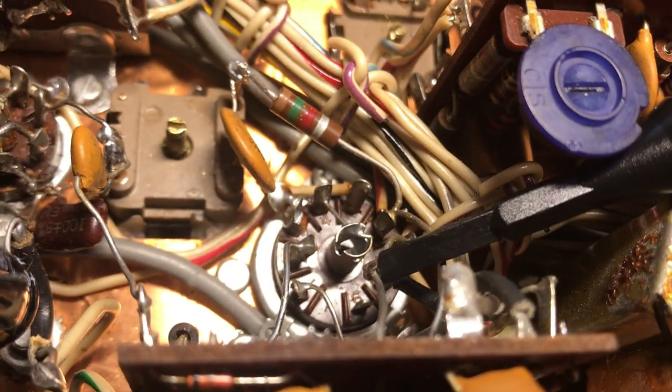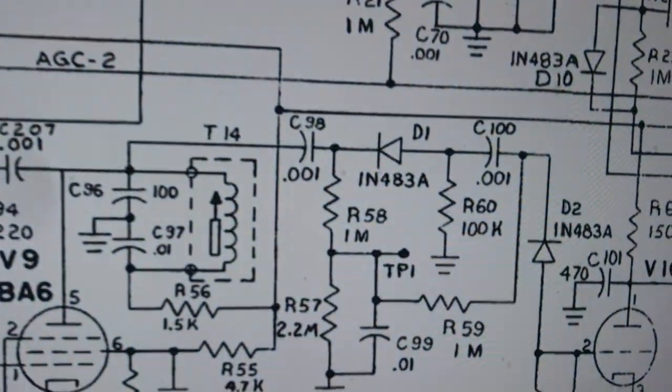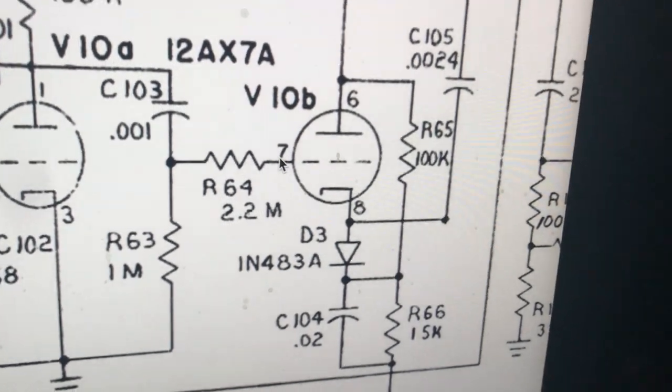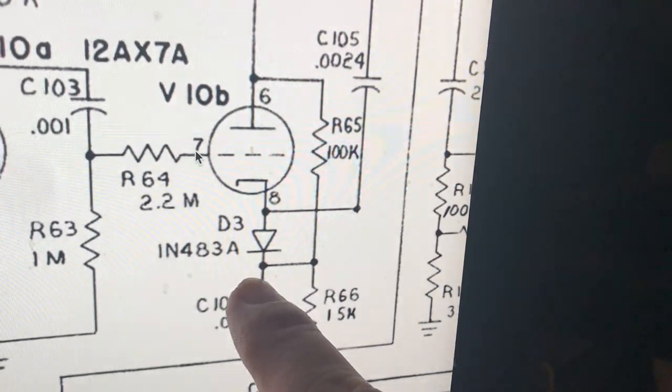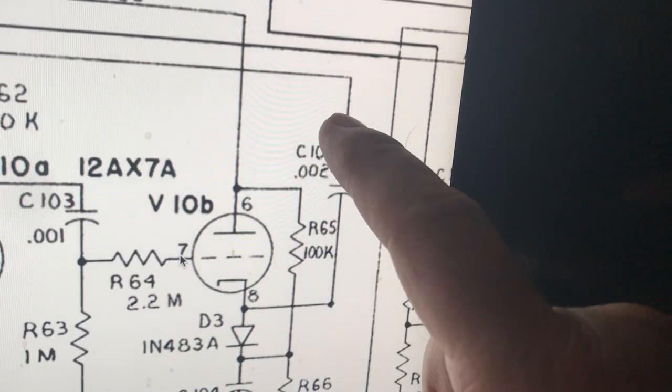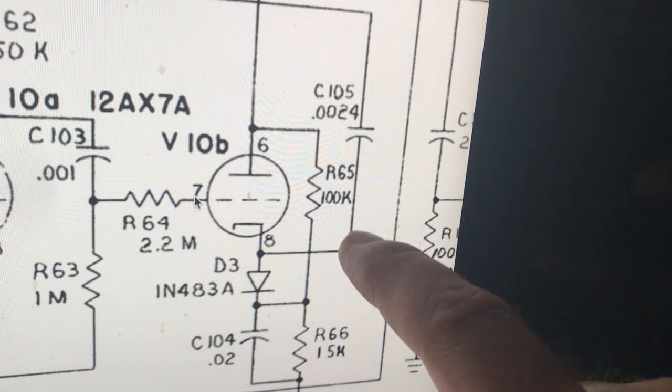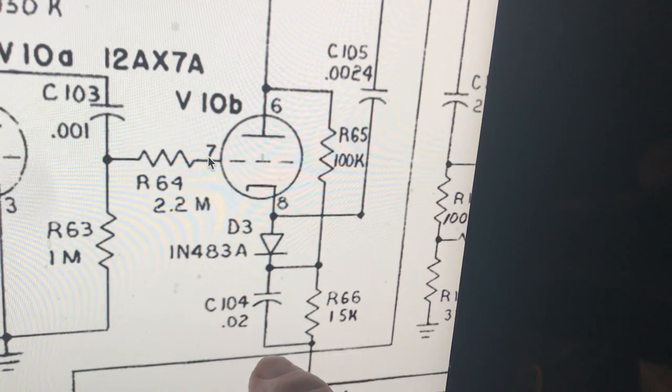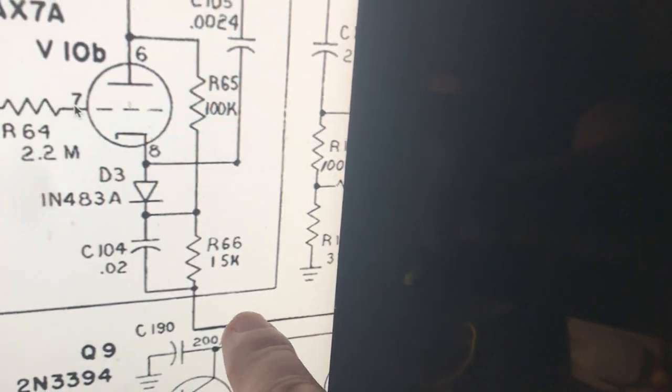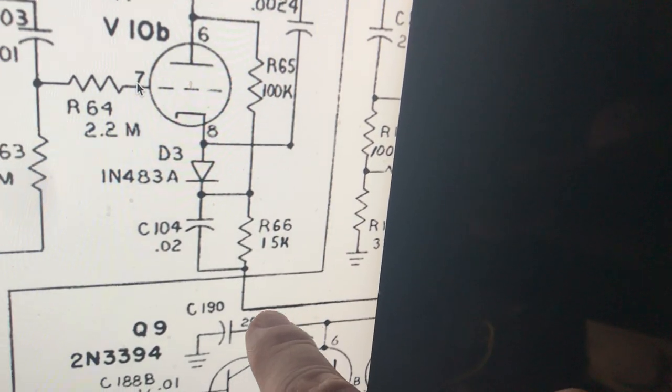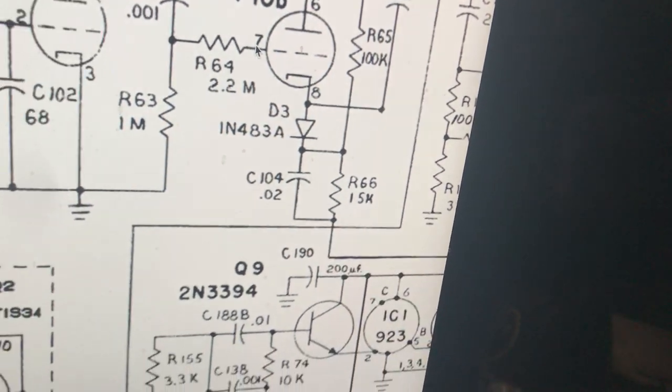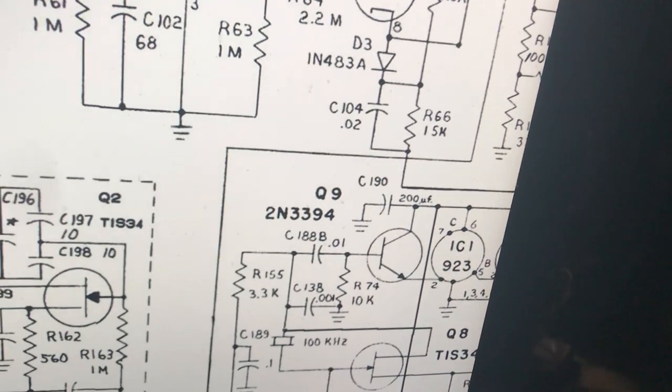The next thing we do is look at the schematic and they say that this diode D3 will conduct and when it conducts, it grounds this capacitor here. It'll ground this RF right to ground. This goes to the switch that engages the noise blanker. This is basically grounded when the noise blanker is on. So let's make sure the noise blanker is on.